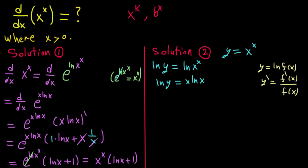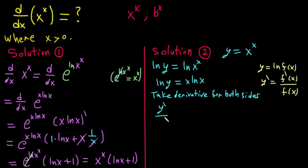Taking the derivative of both sides: the left side gives y'/y. On the right side we apply the product rule to x·ln x, giving 1·ln x plus x·(1/x). The x and 1/x cancel, so we get ln x + 1.